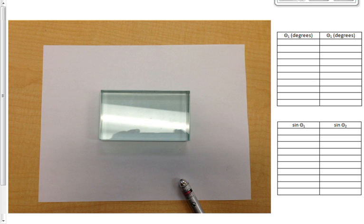Today we're going to perform an activity, the purpose of which is to find the index of refraction for a piece of glass. There's a picture up on the board right now with a piece of glass sitting on a piece of paper.